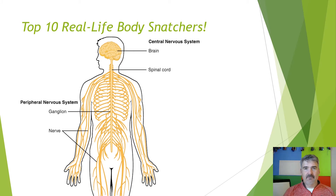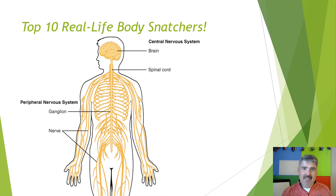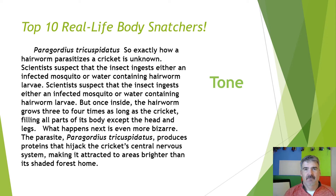What happens next is even more bizarre. The parasite Paragordius tricuspidatus produces proteins that hijack the cricket's central nervous system, making it attracted to areas brighter than its shaded forest home. Notice that the author says the parasite produces proteins that hijack the cricket's central nervous system. What does that term hijack mean? Take a moment and write on your paper what you think the author means by using the word hijack in the context of this article. Be specific in using details from the article. Take about 30 seconds.